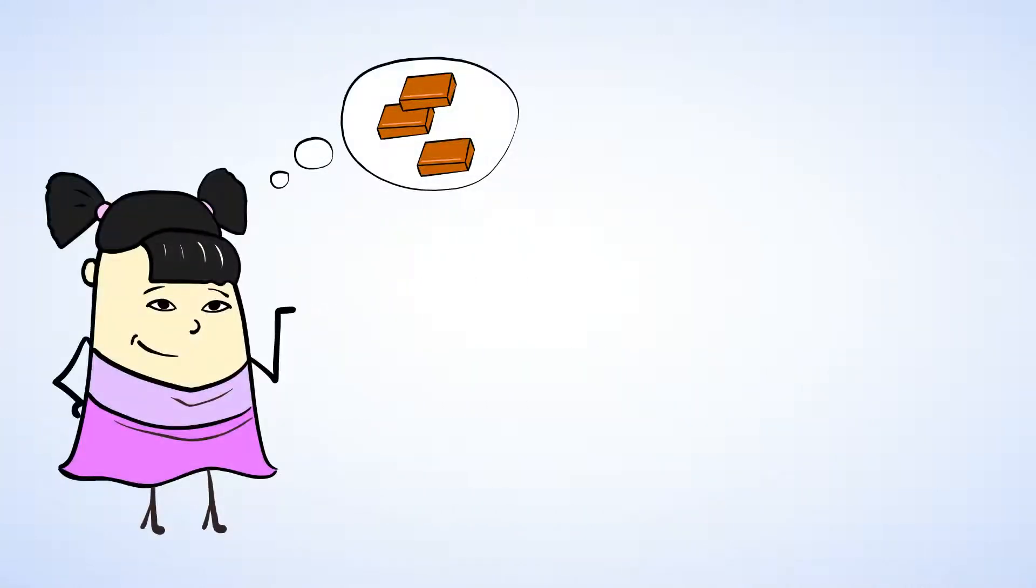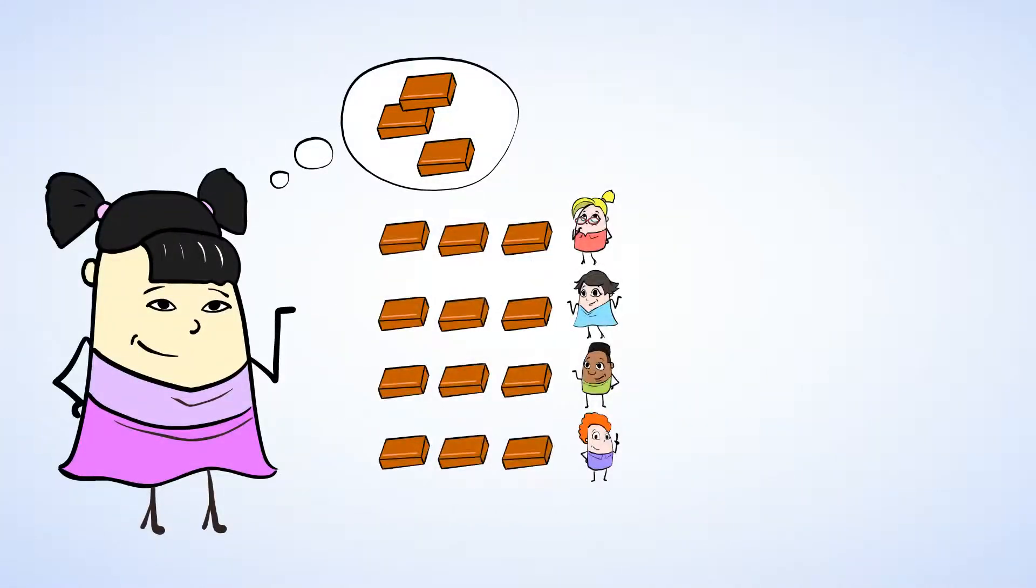What if I wanted some chocolate too? Now there are 4 people who want to share the 12 pieces. This creates the equation 12 divided by 4. You can also think 4 times what is equal to 12? You just did that! 4 multiplied by 3 is 12.